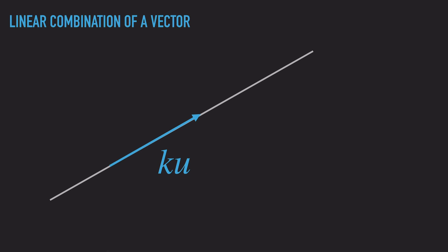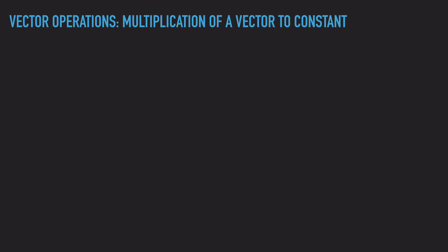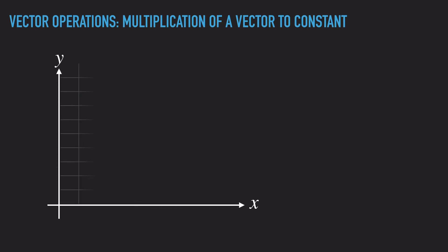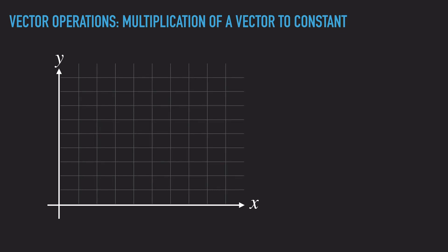Now let's discuss what it means to take the linear combination of two vectors. To do this, we first need to introduce another operation with vectors: the addition of vectors. If you are given two position vectors on the x-y plane starting from the origin, to add them I place the second vector — the red vector — at the end of the first vector — the blue vector — and then connect the starting point and the ending point of those vectors. By connecting the starting point of the blue vector and the ending point of the red vector, we find the sum of the two vectors.